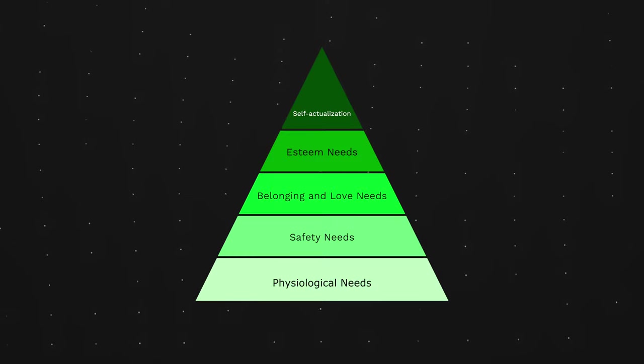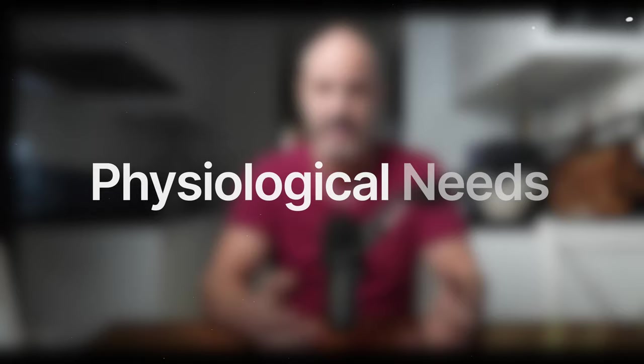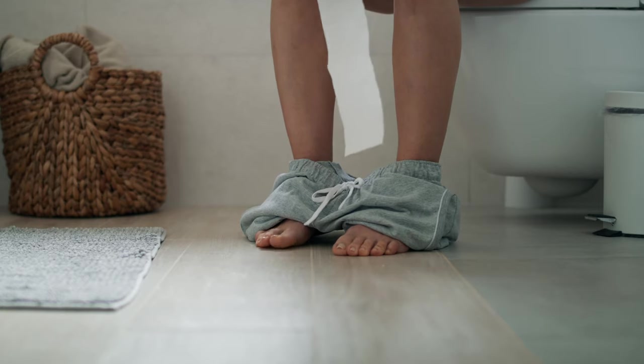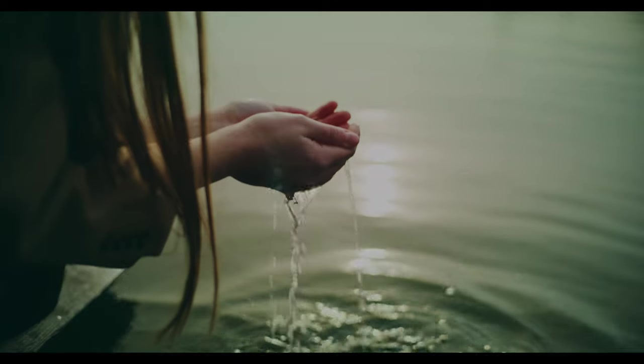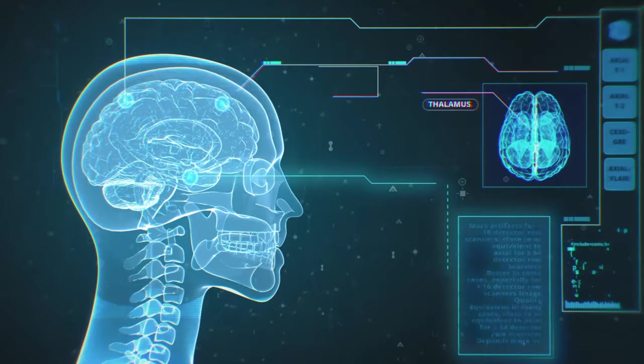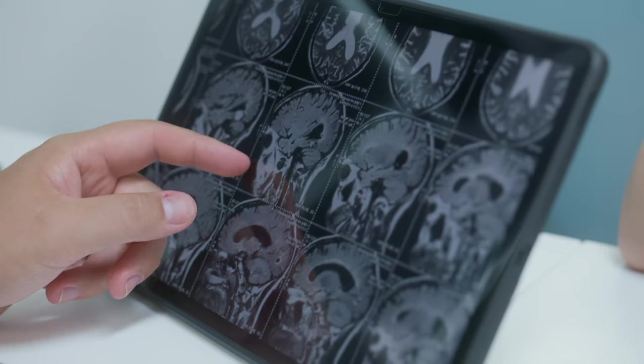The first three levels are the ones to pay attention to: access to toilet, food, water, and sex. This is regulated by your hypothalamus in your brain.